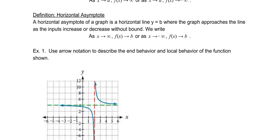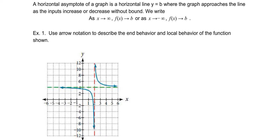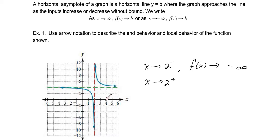Use arrow notation to describe the end behavior and local behavior of the function shown. The places where things are going awry are where x approaches 2. As x approaches 2 from the left, the outputs tend toward negative infinity, so f of x approaches negative infinity. As x approaches 2 from the right, the outputs go to positive infinity. That indicates the vertical asymptote.